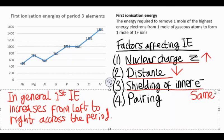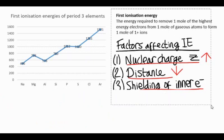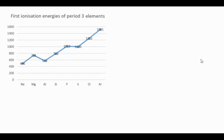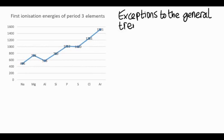The second thing we need to do is have a look at the exceptions to this general pattern. So the general pattern is overall an increase from left to right across a period in first ionization energy. But chemistry is always concerned with looking at the exceptions and explaining those too. So have a look at the graph and can you spot the exceptions in the increasing pattern? The first one is aluminium. It drops a little bit from magnesium to aluminium. And also sulfur. It drops from phosphorus to sulfur. But everything else just increases.